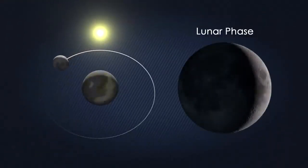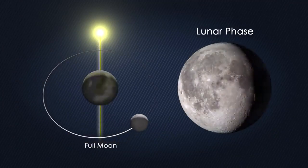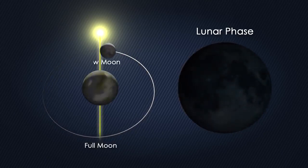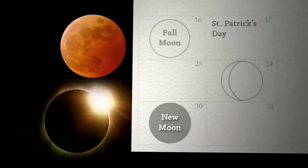But the moon circles the Earth every month as it cycles through its phases, lining up at both full moon and new moon. So why don't eclipses happen twice a month?